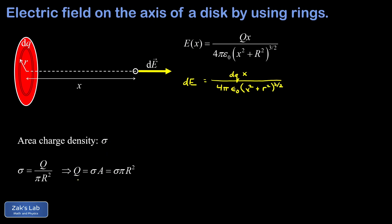Next, we use the idea that charge equals area charge density times area to re-express dq in terms of the ring geometry. Instead of writing dq, we have the area charge density multiplied by the area of the ring. That area is given by the circumference times the thickness — imagining cutting and unrolling the ring into a thin rectangle — giving a length of 2πr and a thickness of dr. So dq = sigma · 2πr · dr.